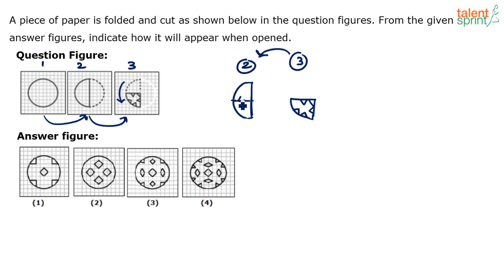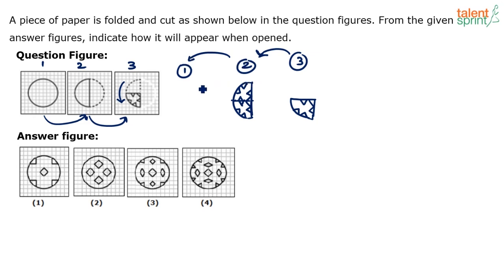The triangle cut becomes a full triangle. The straight cut remains and reflects. The small triangle also reflects in the water image. From 2 to 1, this semicircle becomes a full circle, and you consider the mirror image along the vertical fold line - the mirror image of everything we have obtained so far.